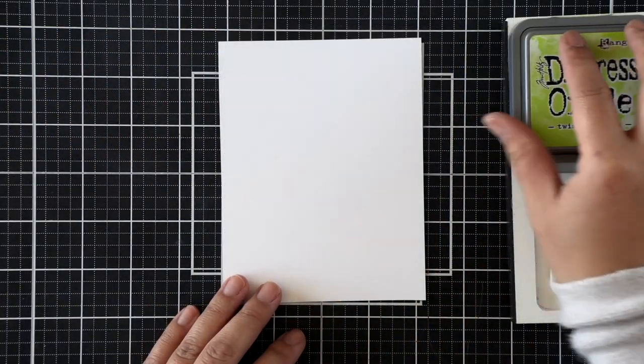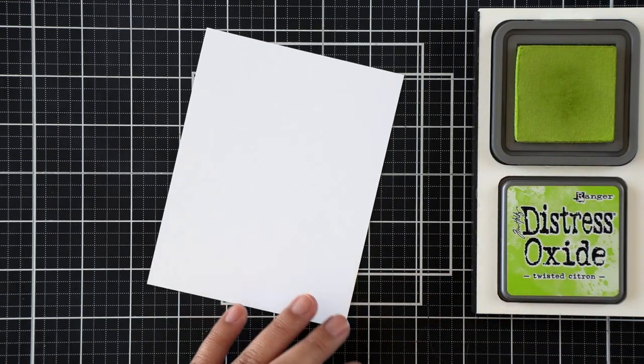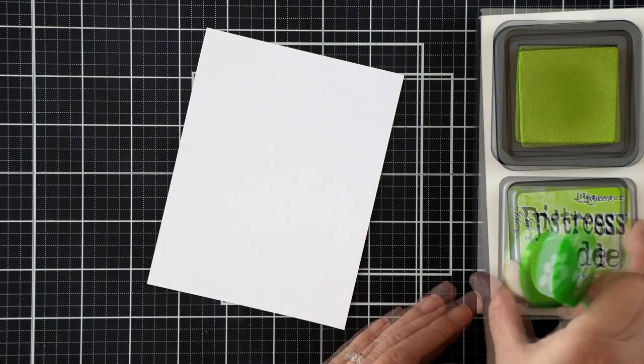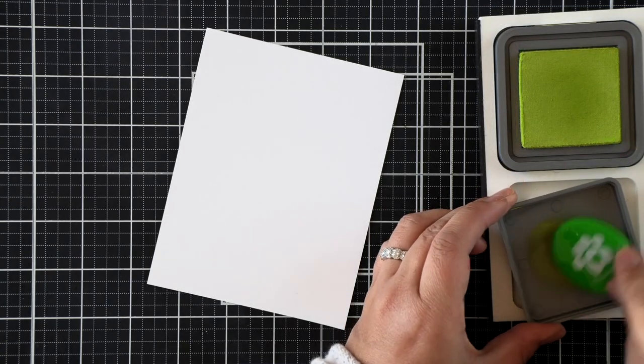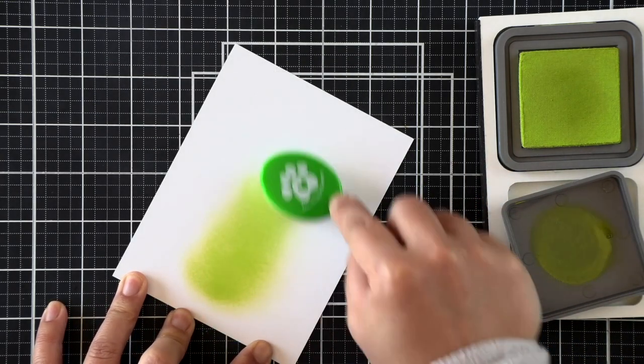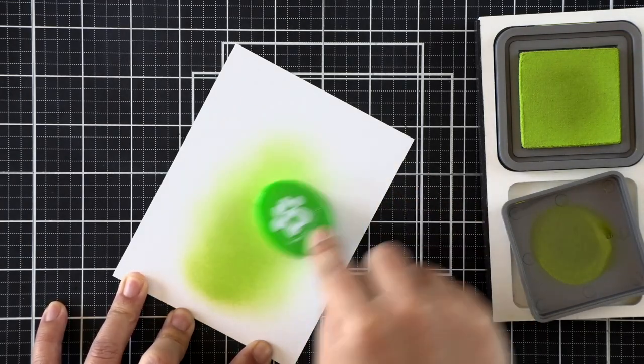Okay, so to create our night scene, I'm going to go ahead and start with some twisted citron. It's going to pull in some of that grassy border that we're going to put on our card, as well as draw in some light from a night scene. So I am starting with the twisted citron, and I'm going to start in the center of the panel from the bottom. And I'm not starting off the page only because I know that this bottom more saturated portion is going to be covered by a grassy border.